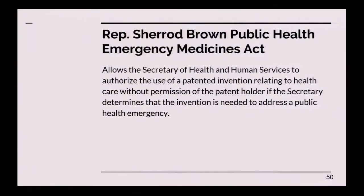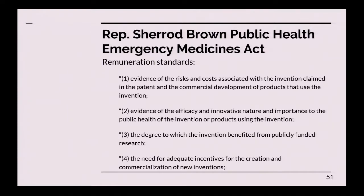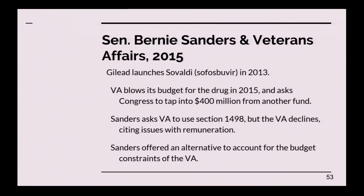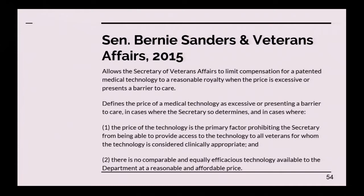The Public Health Emergency Medicines Act allowed the Secretary to authorize the use of a patented invention related to health care if the Secretary determined that the invention was needed to address a public health emergency. The remuneration standards addressed the costs of R&D, evidence of efficacy, and other factors. Finally, in 2015, Senator Bernie Sanders proposed an amendment that would have allowed the Department of Veterans Affairs to issue compulsory licenses on medicines after they blew out their budget on sofosbuvir, the hepatitis C drug. Interestingly, this legislation would have allowed them to account for budget constraints in setting the royalty rate.